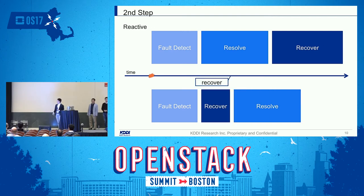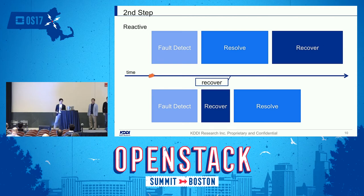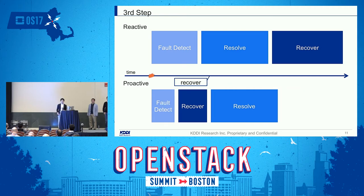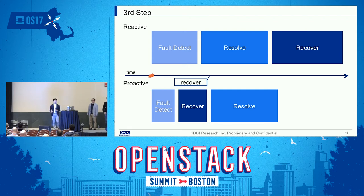The second step is easy: shorten recovery time using automation technology like orchestrators. In reactive operation, the operator recovers manually. But in periodic and proactive operation, the orchestrator recovers automatically. That is the second step to proactive operation. The third step is also about shortening fault detection time. But there are some challenges in NFV, because there are lots of VNFs and several components we have to monitor, and we want to collect several items to detect silent failures. Next, Mibu-san will explain what the challenges are for shortening fault detection time.